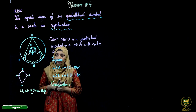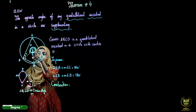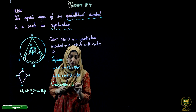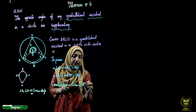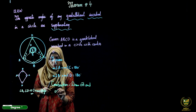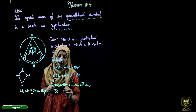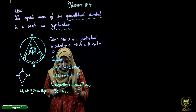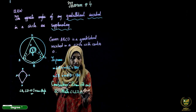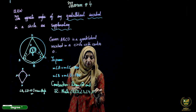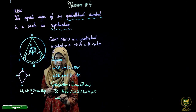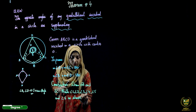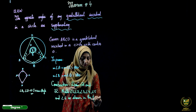Construction: As mentioned earlier, we draw line segments OA and OC — joining O to A and O to C. We also name the angles in the figure as angle 1, angle 2, angle 3, angle 4, angle 5, and angle 6, as shown in the figure.